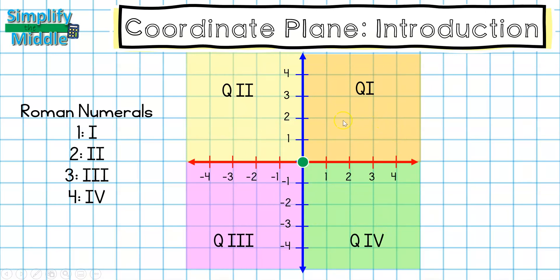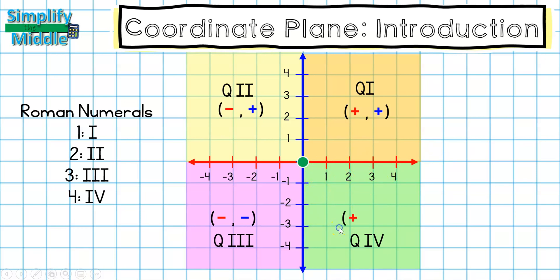Since quadrant one is positive-positive, that means a positive x-coordinate and a positive y-coordinate. In quadrant two, my x-values are negative but my y-values are positive. In quadrant three, both coordinates are negative. And in quadrant four, my x-coordinates are positive but my y-coordinates are negative.